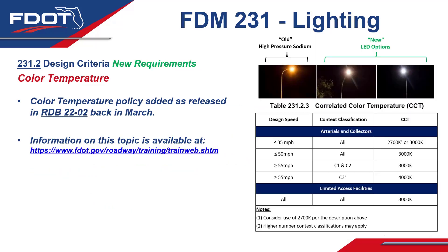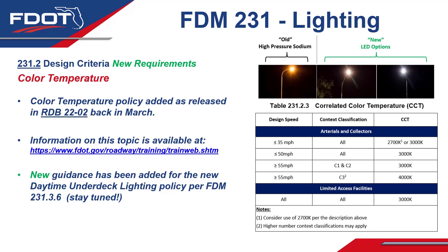Our next FDM 231.2 topic heading is color temperature, where we have some new requirements. The FDM now shows the new color temperature policy added as released in Roadway Design Bulletin 2202 back in March. Following extensive statewide reviews and discussions, designers will now be assigning color temperature based on the roadway's design speed and context classification. A more thorough explanation is available as a short video training at fdot.gov/roadway/training/trainweb. Some new guidance has also been added for the new Daytime Underdeck Lighting Policy per FDM 231.3.6, which will be discussed in upcoming slides.